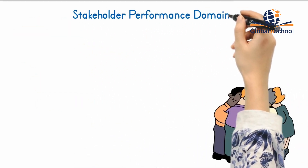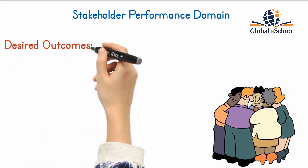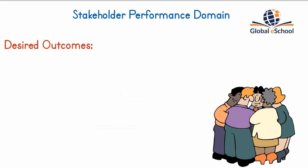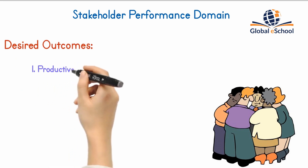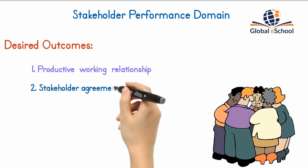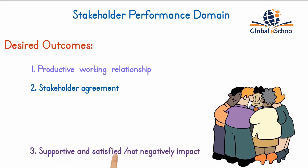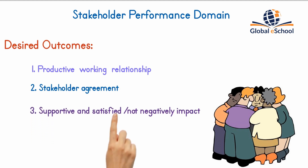The stakeholder performance domain addresses activities and functions associated with stakeholders. Effective execution of the performance domain results in the following desired outcomes: a productive working relationship with stakeholders throughout the project, stakeholder agreement with project objectives, stakeholders who are the project beneficiaries are supportive and satisfied, while stakeholders who may oppose the project or its deliverables do not negatively impact project outcomes.